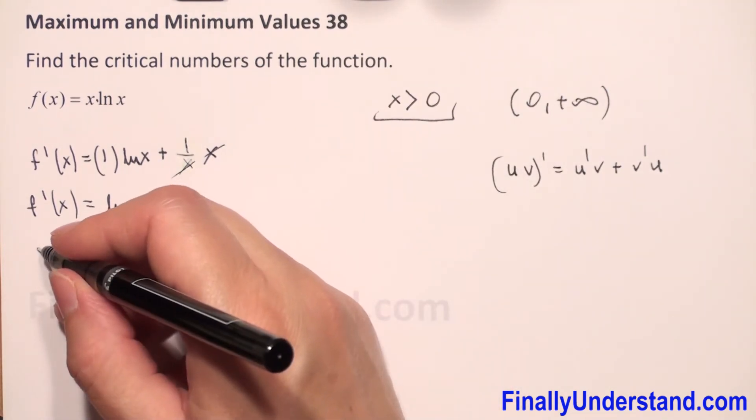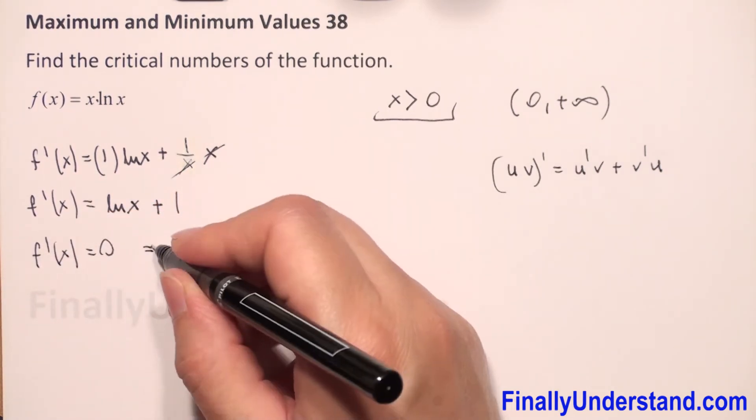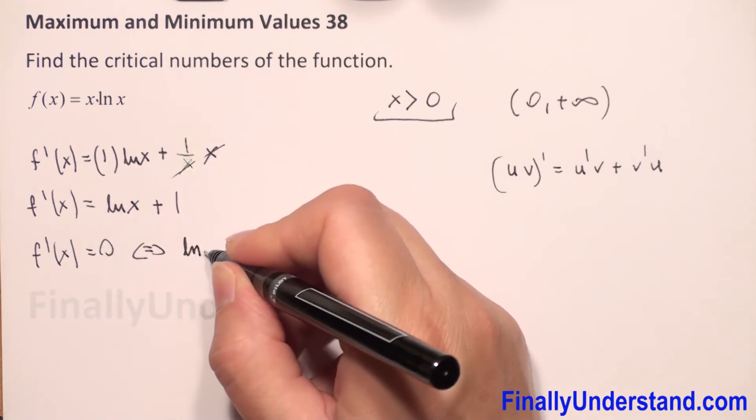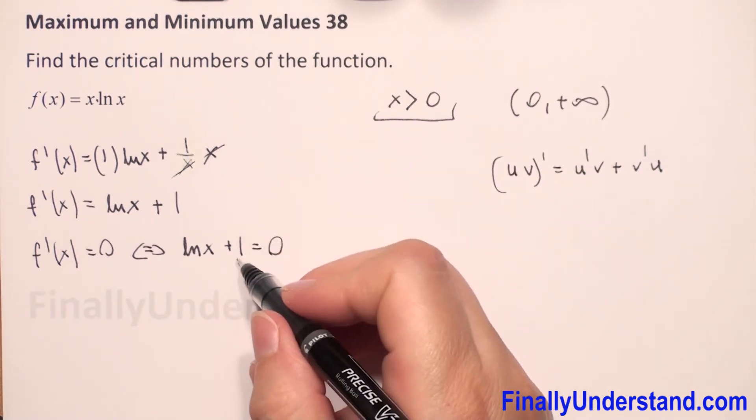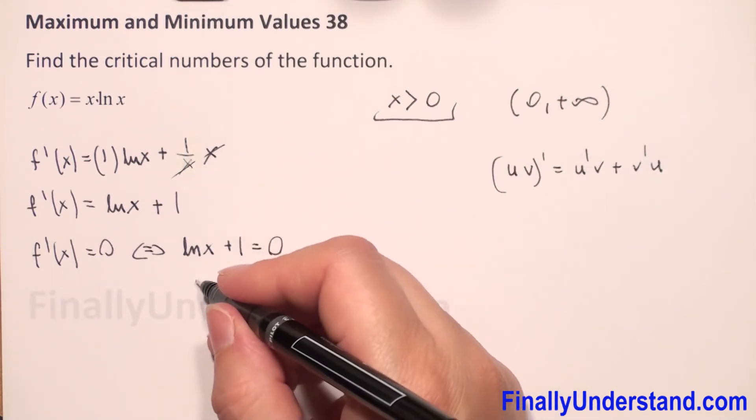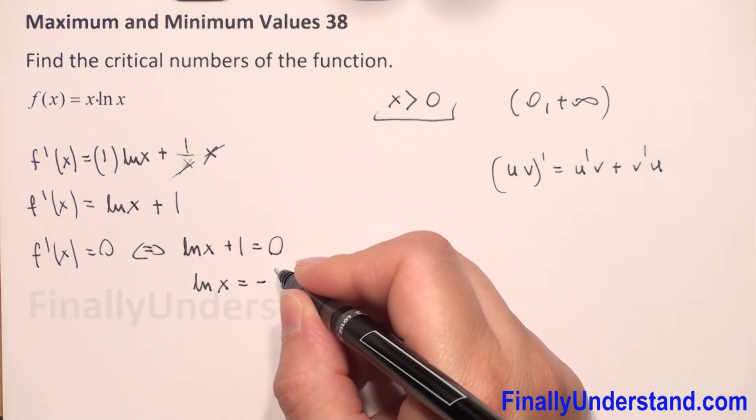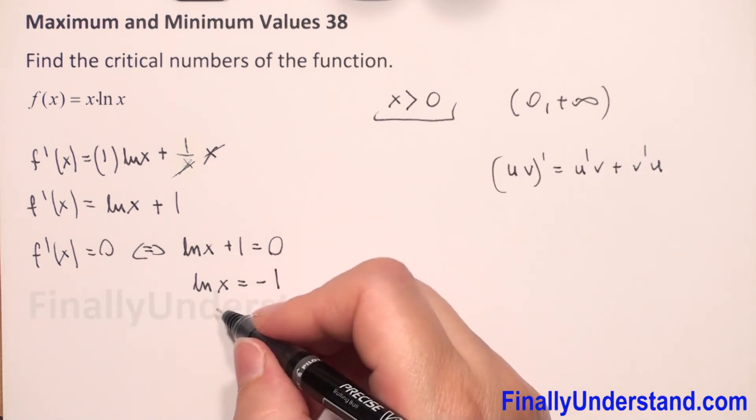Now, we have to set our first derivative equals 0. If and only if we have natural log of x plus 1 equals 0. I will move 1 to the right side, so we have natural log of x equals negative 1. From definition of logarithm, the base for natural log is e.